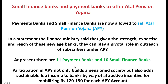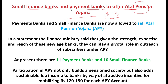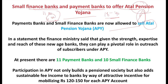Small Finance Banks and Payment Banks can now also offer Atal Pension Yojana. APY is a pension scheme for the age group between 18 to 40 years; once you retire at age 60 you get a pension. This has been done so that APY reaches more people. Banks will get 120 to 150 rupees for mobilizing one APY account — making it a source of income for small finance banks and payment banks.